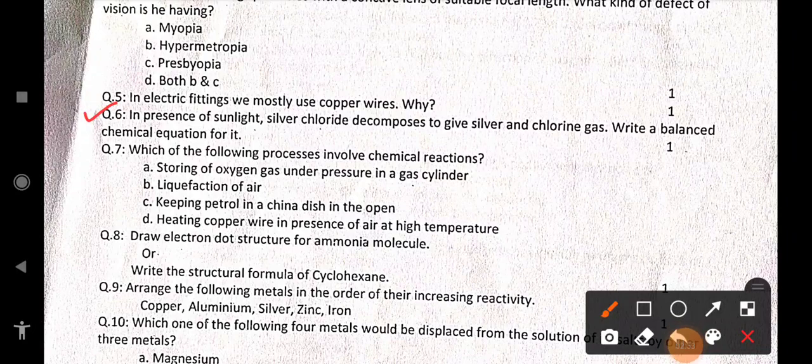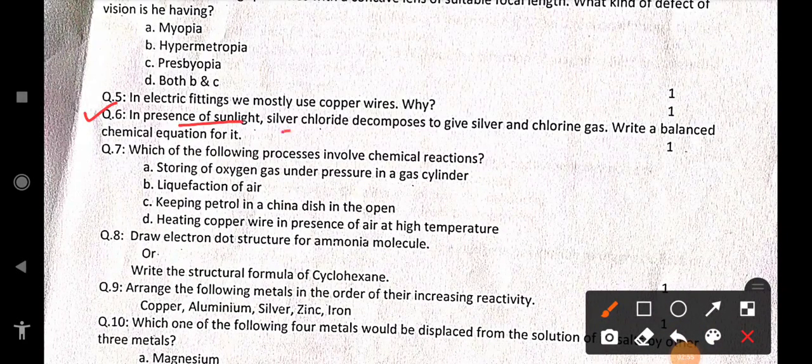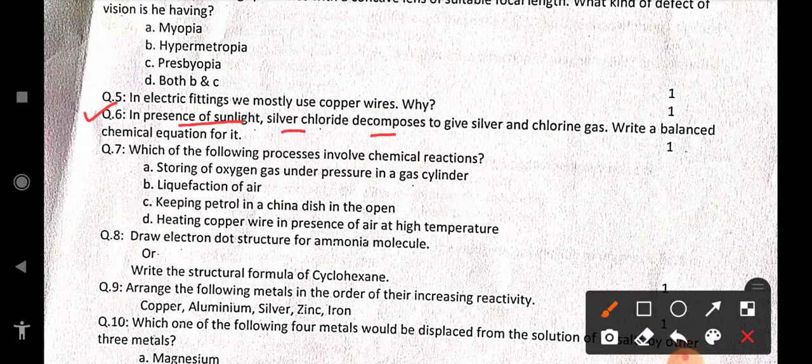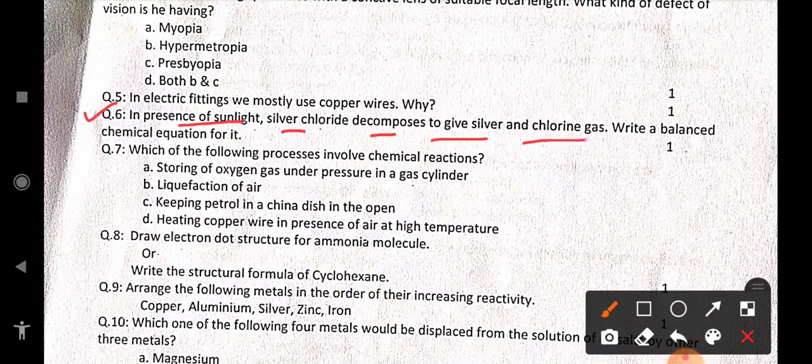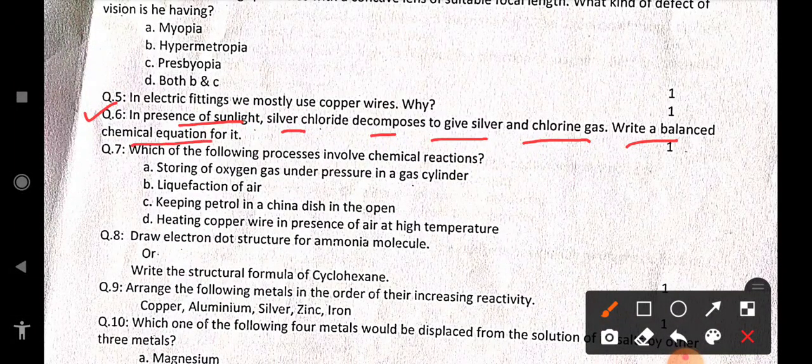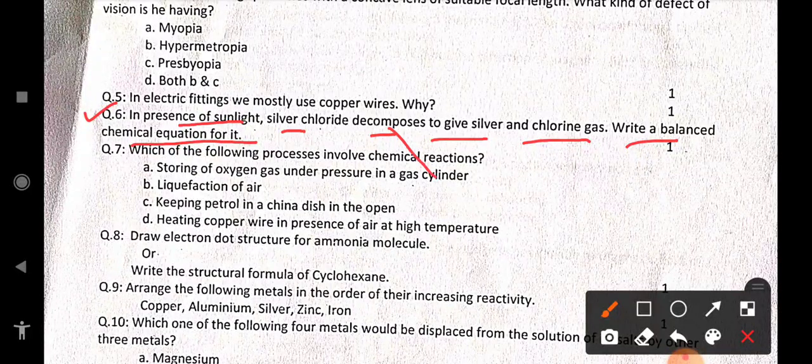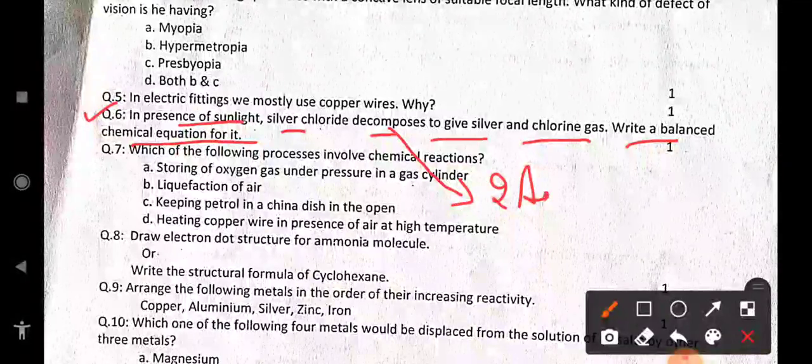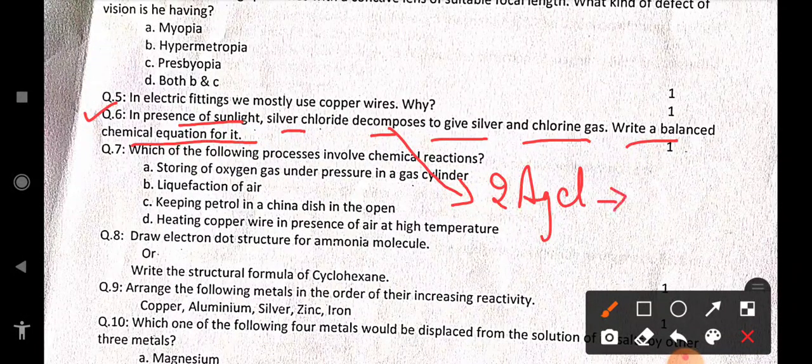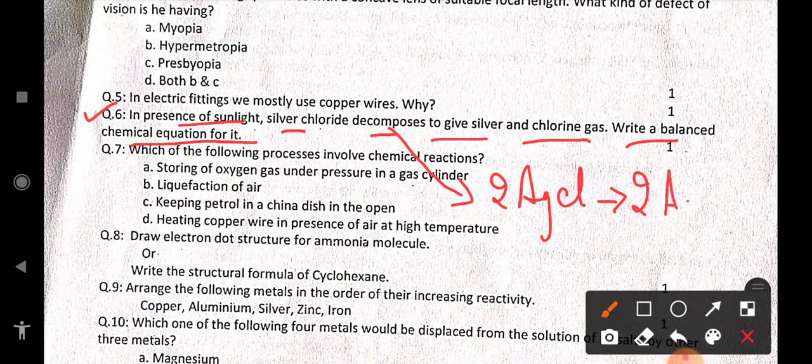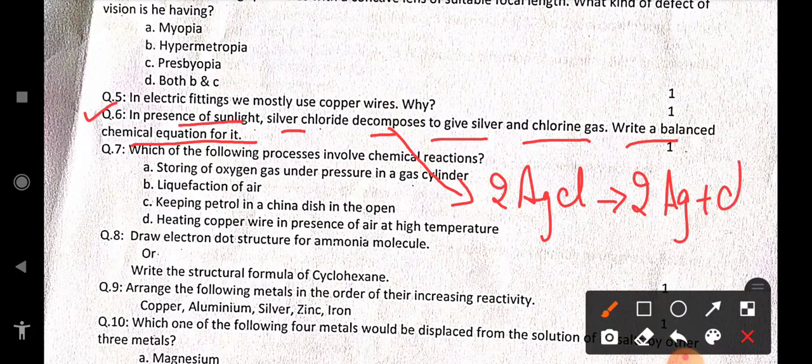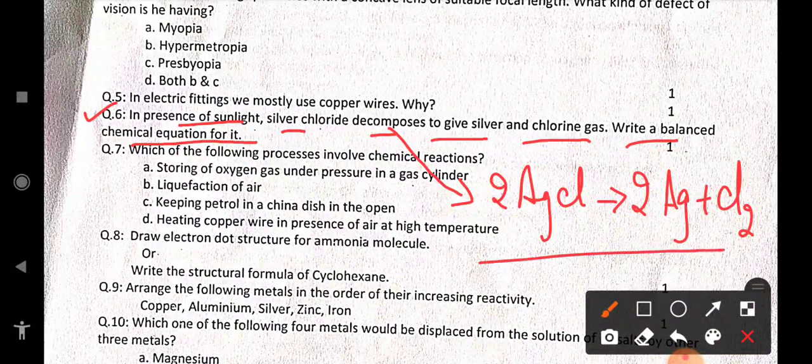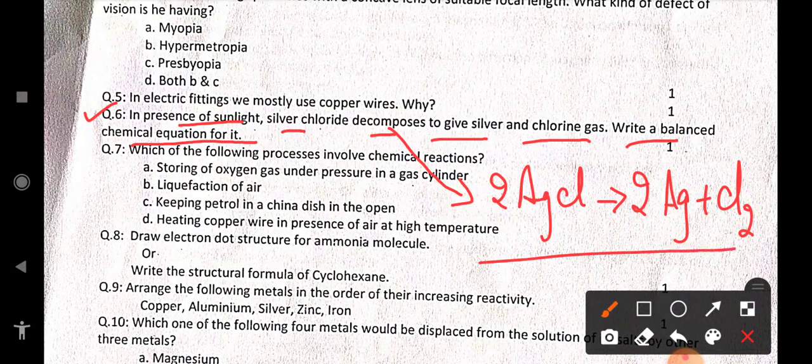Question number 6. In presence of sunlight, silver chloride decomposes to give silver and chlorine gas. Write a balanced chemical equation for it. So the balanced chemical equation for it will be 2 AgCl which gives 2 Ag plus Cl2. So this is going to be your chemical equation.